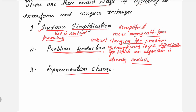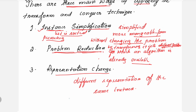The third approach is the representation change. Here, you give a different representation of the same instance. For example, take the binary tree. In a binary tree, elements are not placed in a proper order. At any point of time, searching, deleting, or inserting an element takes much time because the elements are not organized. For that reason, you convert this into a binary search tree.